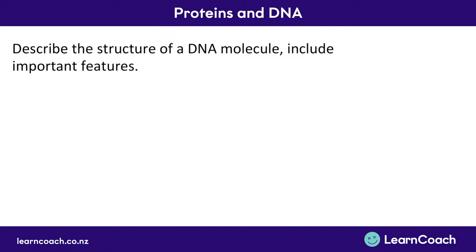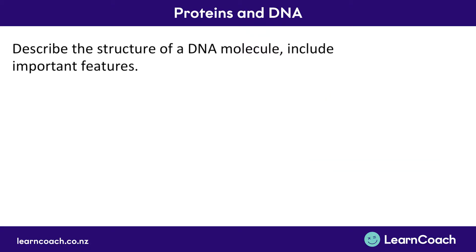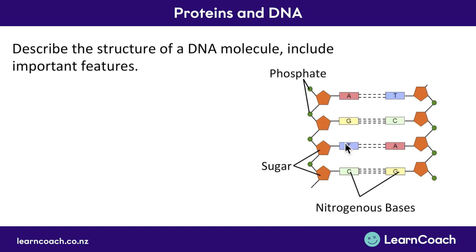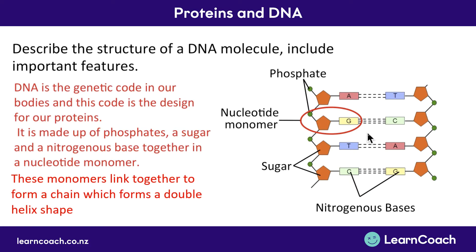Let's look at a question: describe the structure of a DNA molecule and include its important features. Here we have a picture of a DNA molecule — you can draw one in your answer. Remember we've matched A with T and C with G, and we draw our sugar and phosphate — a circle is fine for the sugar. You can point out the little phosphates that connect the sugars together, the sugars which connect through to the bases, and label these nitrogenous bases — the correct term that will get you extra points. Altogether you can label the phosphate-sugar-base combination a nucleotide monomer. When writing your answer, it's always good to define terms: DNA is the genetic code for our bodies and the design for our proteins. It's made up of phosphates, a sugar, and a nitrogenous base — altogether called nucleotide monomers — which link together in a chain in a double helix structure.